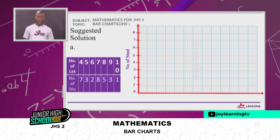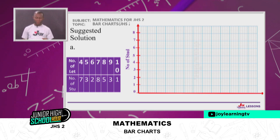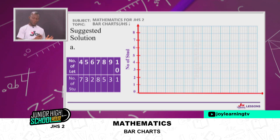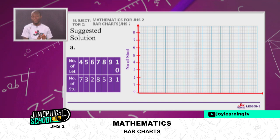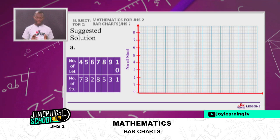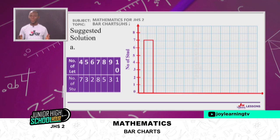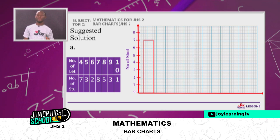Pick up your graph sheet, ruler, and pencil. I have my graph sheet ready with the frequency axis — the vertical axis — labeled 'number of students', with measures from zero to eight. I was using two centimeters to one unit, so my scale is two centimeters equals one unit on the frequency axis. I draw my first bar to correspond to frequency seven — the number of letters which is four has a frequency of seven.